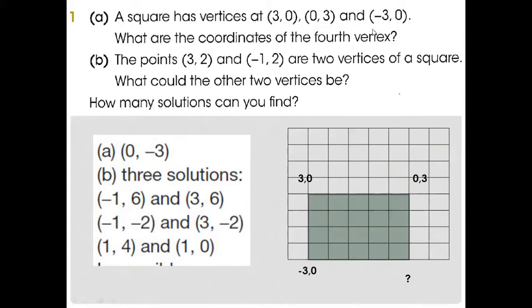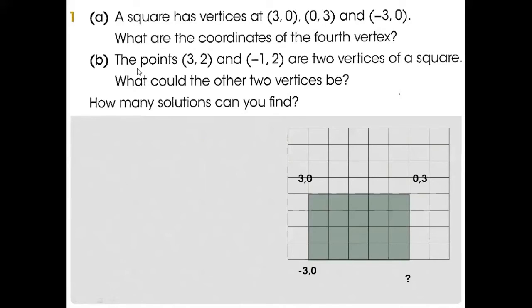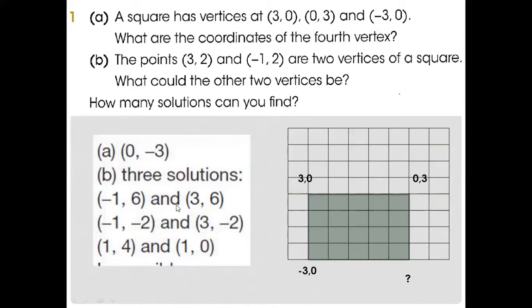So that's why our answer is (0, -3). Now part B: the points (3, 2) and (-1, 2) are two vertices of a square. What could be the other two vertices? So look at here, there are a lot of possible chances. Like I told you before, if you have (-1, 2), other should be (-1, -2).